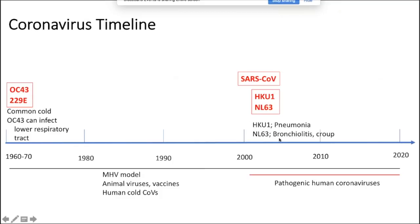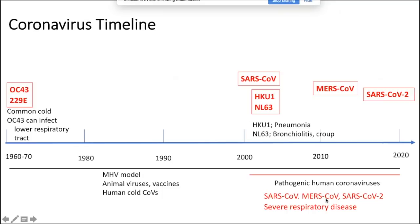HKU1 causes pneumonia and NL63 can cause bronchiolitis and croup. Then things were quiet until 2012, when MERS emerged in the Middle East, causing another severe respiratory disease. And as we all know, SARS coronavirus 2 emerged at the end of 2019. All of these viruses cause severe respiratory disease. SARS coronavirus is the name of the virus; the name of the disease is COVID-19, or coronavirus disease 2019.